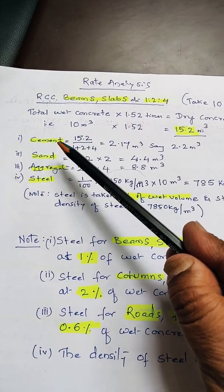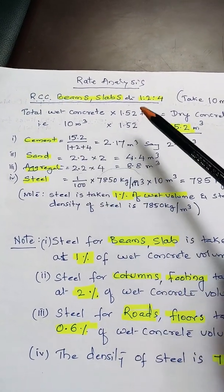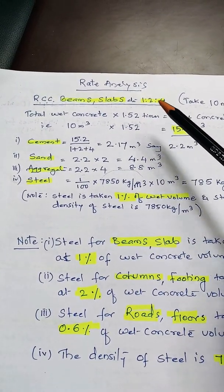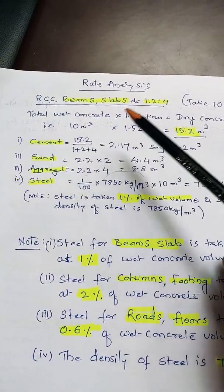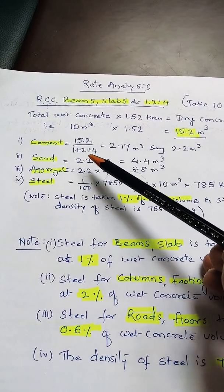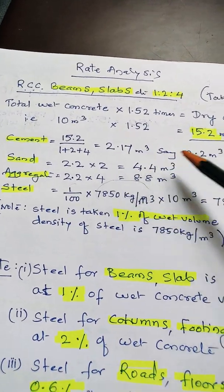First, cement: 15.2 divided by the ratio sum. For 1:2:4, if we add 1 plus 2 plus 4, it comes out to 7. So 15.2 ÷ 7 = 2.17, say 2.2 meter cube of cement.